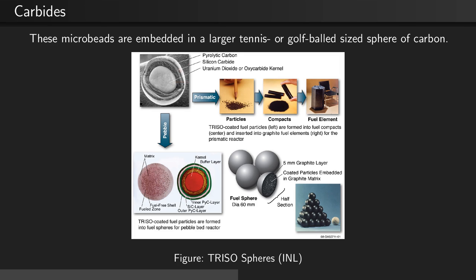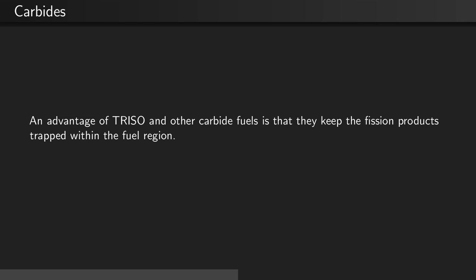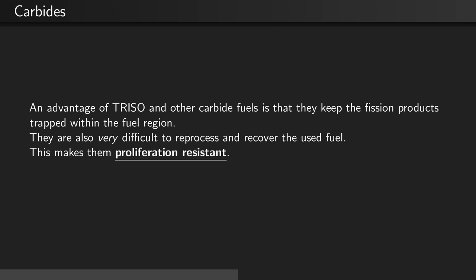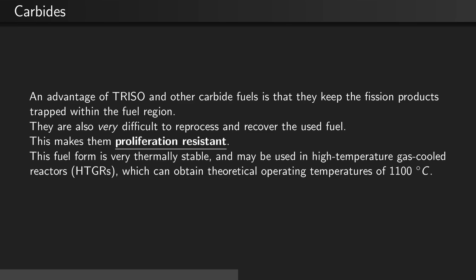These microbeads are embedded in larger tennis or golf ball-sized spheres of carbon — you can fit many, many of the microbeads inside a single golf ball-sized sphere. An advantage of TRISO and other carbide fuels is that they keep the fission products trapped within the fuel region at the center of the microbeads. They are also very difficult to reprocess, making them proliferation resistant. This fuel form is very thermally stable and may be used in high-temperature gas-cooled reactors, which can theoretically obtain operating temperatures of 1,100 degrees C or higher.